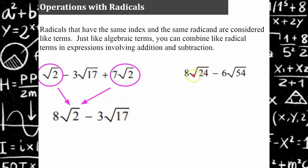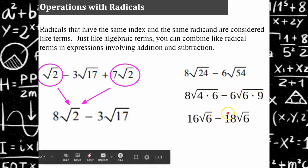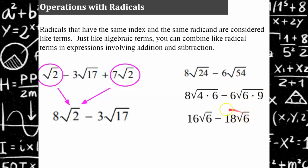Let's try another one. Looking at 8 square root of 24 subtract 6 square root of 54. First, I need to simplify these radical terms — they are not in simplest form. The square root of 24 can be written as 4 times 6 where 4 is a perfect square. And 54 can be written as 9 times 6 where 9 is a perfect square. So writing these in simplest form: the square root of 4 is 2, and 2 times 8 is 16, leaving the radicand of 6. In this term, the square root of 9 is 3, and 3 times 6 is 18, leaving the radicand of 6. Now these are like terms because they have the same index 2 and they both have a radicand of 6. So we can add their coefficients. 16 subtract 18 is negative 2 square root of 6.